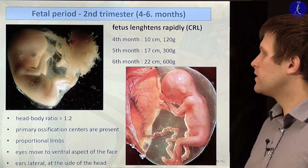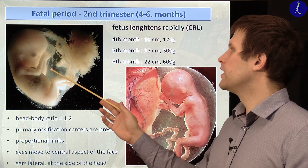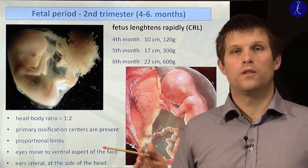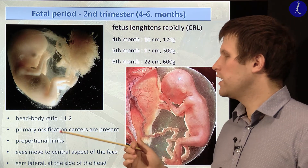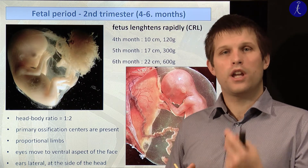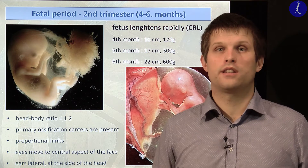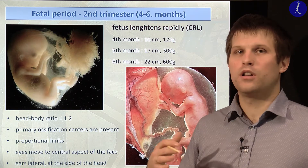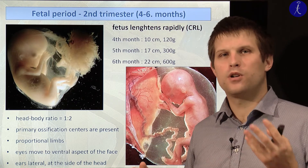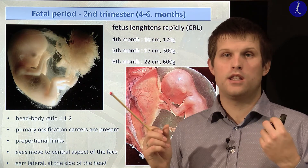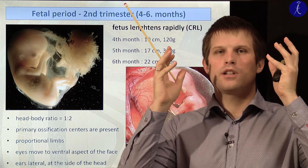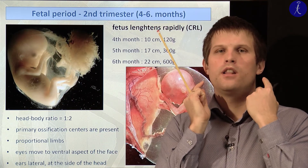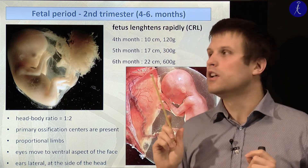In the fetal period, in the first trimester the head is almost one half of the total body length, while in the fetal period it will be just one third — so the head-to-body ratio changes. Primary ossification centers develop and ossification starts. Proportional limbs develop. Importantly, in the very beginning the eyes are located on the sides of the embryo, but during fetal life the eyes move ventrally to their final position, while the ears develop very low and later ascend and move laterally to their final destination.